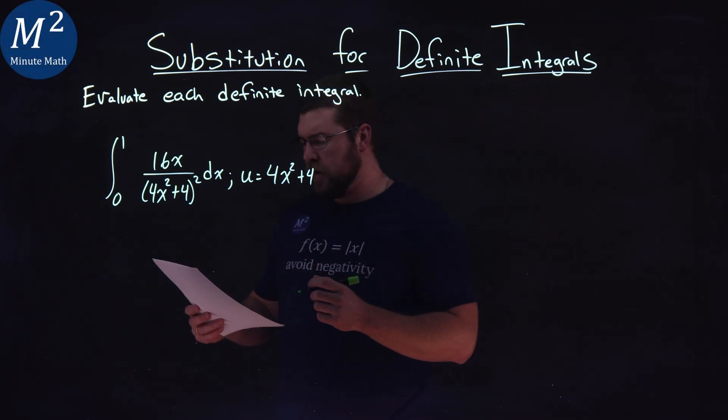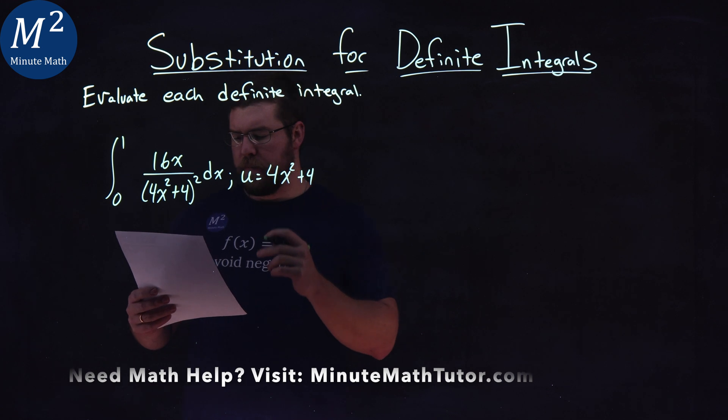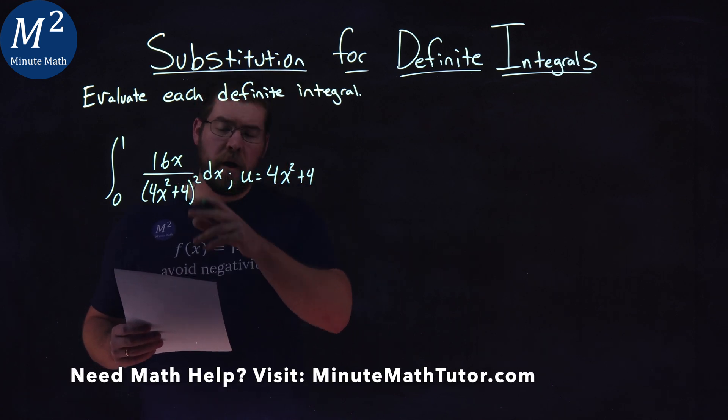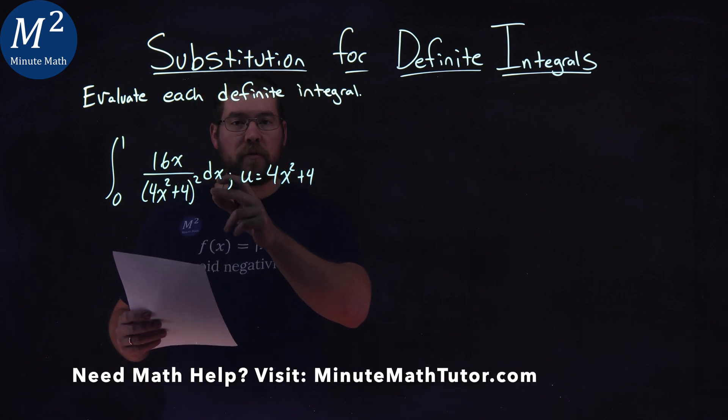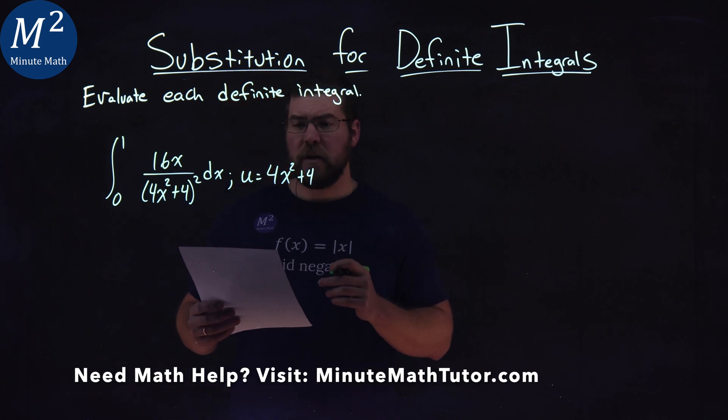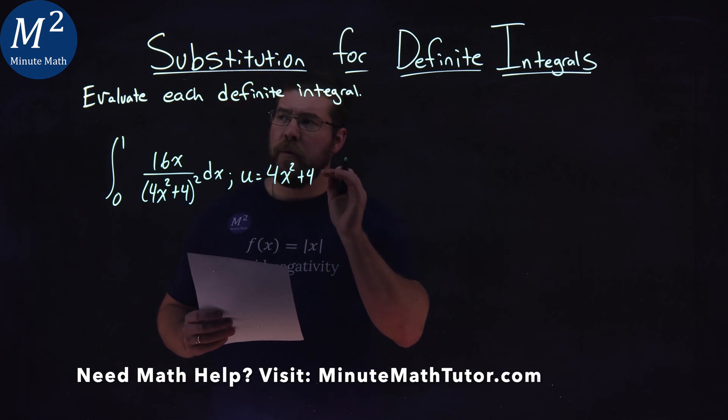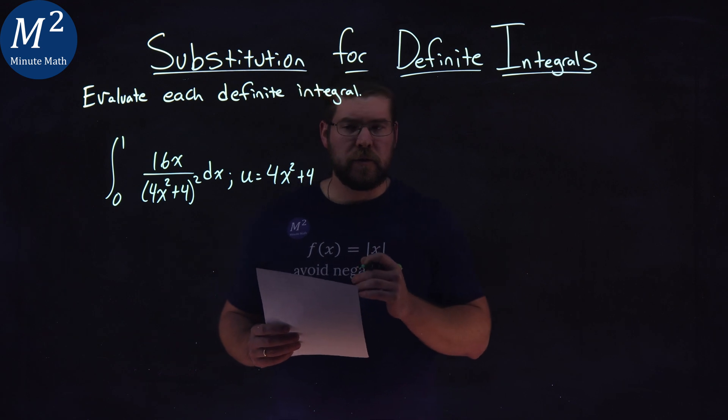We're given this problem right here: the integral from 0 to 1 of 16x over (4x squared plus 4) all squared dx. We're given a u value of 4x squared plus 4, and we have to evaluate this definite integral.